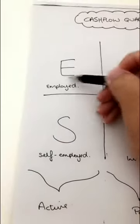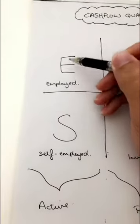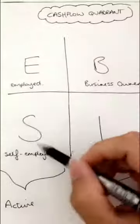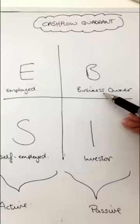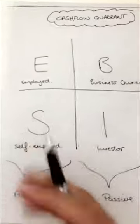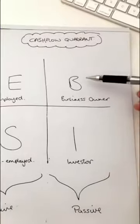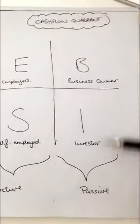Many people have a job — they're employed — and they think the dream is to one day be self-employed. Many people who make that transition realize they've just got a more stressful job and many don't get paid that much more. If you're here or here, try to get to here as quick as you can. If you're self-employed, get someone else on the team. Work on the business, not in the business. On this side you're working for money; in the business quadrant other people are working for you; and in the investor quadrant your money is working for you.